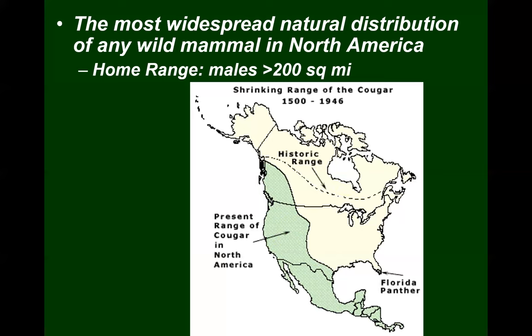A lot of people claim they see cougars here in North Carolina — we don't have mountain lions here. You didn't see a mountain lion; you more than likely saw a big dog, a bobcat, or something else. It probably wasn't a mountain lion.